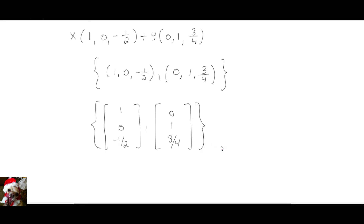And there it is — at this point the problem is finished. Those two vectors are the basis for the plane 2x minus 3y plus 4z equals 0.